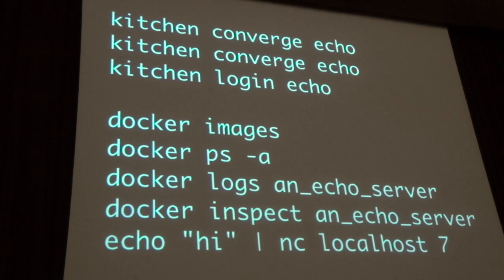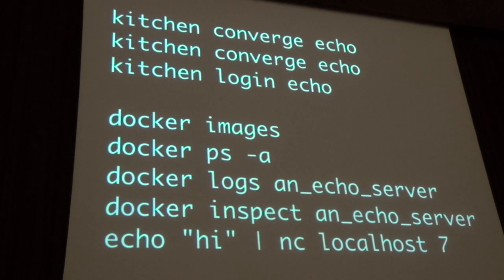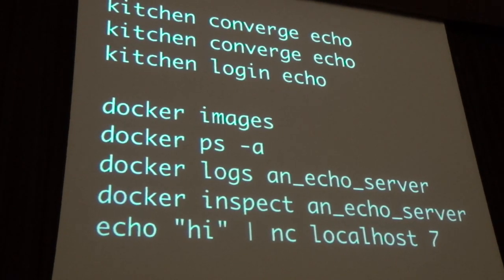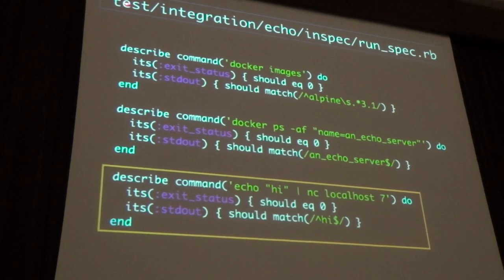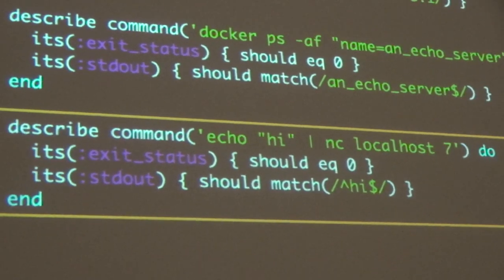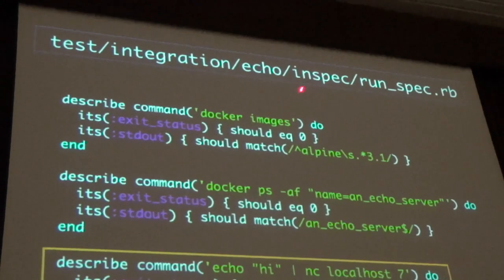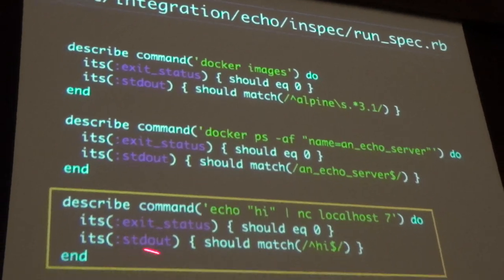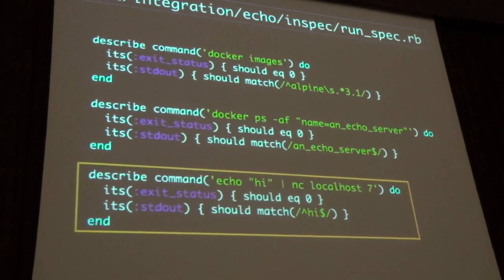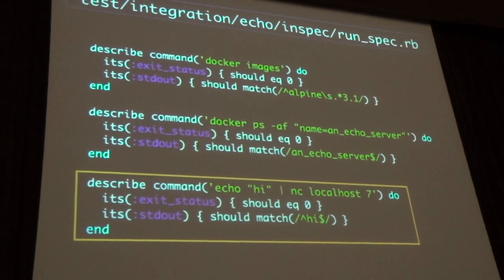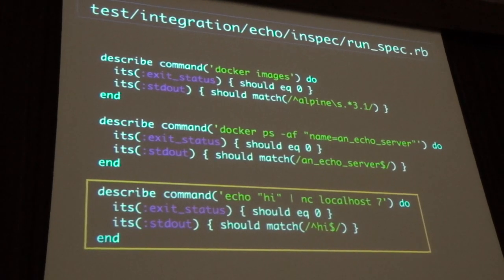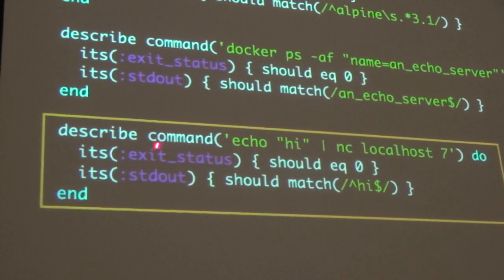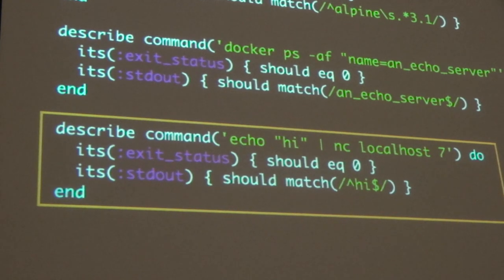We're looking for information to use to write the behavioral tests. There are no logs — I know that because I logged in and went looking. I can inspect the container and see stuff. I'm trying to generate evidence that this is actually working properly so I can write my behavior tests. It turns out if I run 'echo hi | netcat localhost 7' I see 'hi' back. I can then make a test directory at 'test/integration/echo/inspect' and document that evidence in my integration tests.